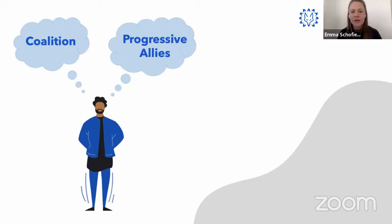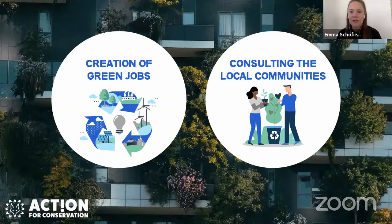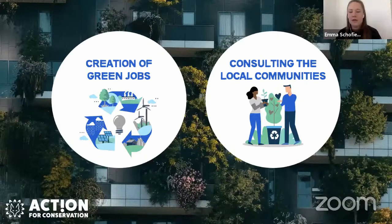How can we make these solutions happen? The first step is recognizing that the climate movement is not only about protecting the planet — it's also about caring about the people who live on it. Environmental policies and actions are often put in place without consideration for the communities they might negatively affect. Second is the creation and expansion of the green job industry — from planting trees to insulating buildings and working on green technologies, with fair wages, respect, and support for everyone involved.